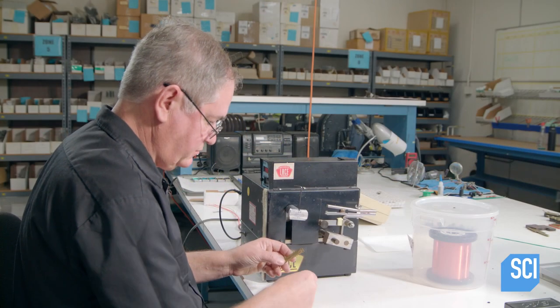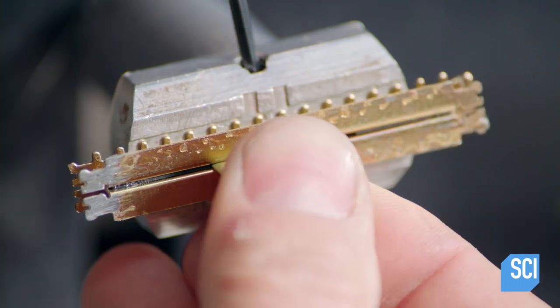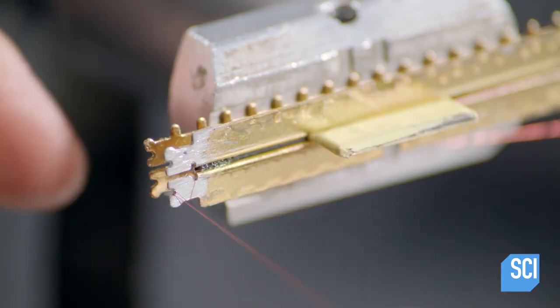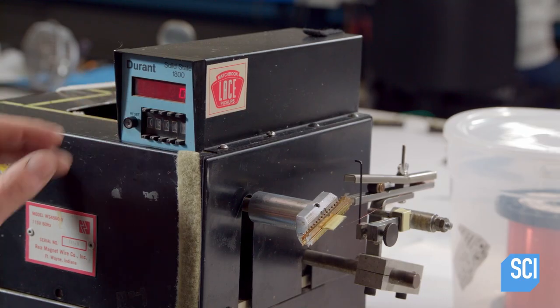He mounts the bobbin to a winding mandrel. He wraps hair-thin copper wire around the end of the bobbin and activates the winding mandrel.